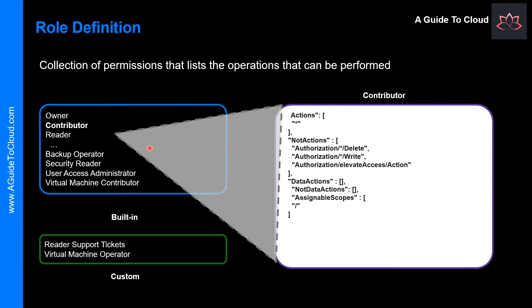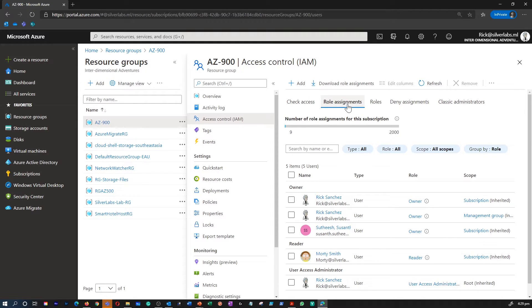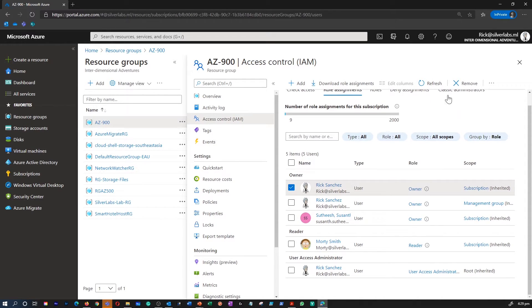This diagram shows a suggested pattern for using RBAC. Each role is a set of properties defined in a JSON file. The role definition includes name, ID, and description. It also includes allowable permissions (actions), denied permissions, and scope. For example, the owner role means all actions, no denied actions, and all scope. A role assignment is the process of attaching a role definition to a user, group, or service principal at a particular scope to grant access. Access is granted by creating a role assignment and revoked by removing one.